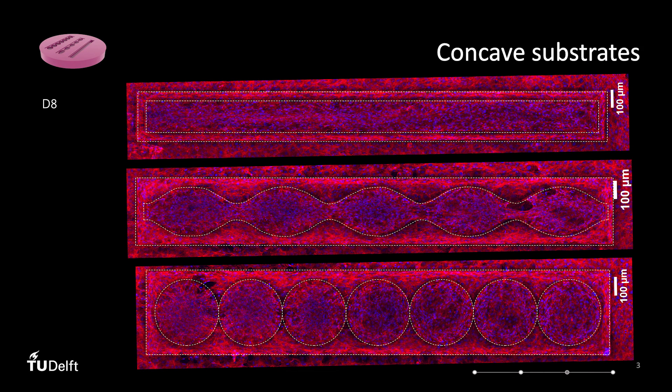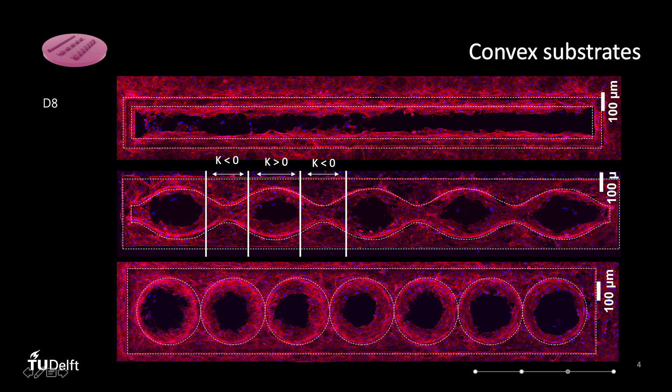Specifically, these cells prefer to settle and grow on the concave substrates and on the local concave regions of the convex substrates. These surfaces are characterized by at least one negative principal curvature.